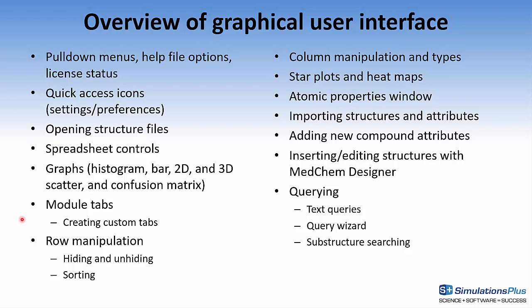Next, I'll talk about manipulating the rows, hiding and unhiding, and sorting them. Similarly, I'll then talk about manipulating the columns and the different types of columns you can have. Two examples are star plots and heat maps. I'll also talk about the atomic properties windows, then go on to importing structures and attributes, adding new compound attributes, inserting and editing structures with MedChem Designer, and then finish up with a discussion of querying the spreadsheet — either text queries, using the query wizard, or performing substructure searches.